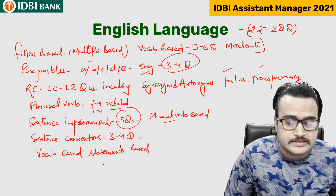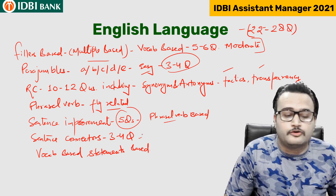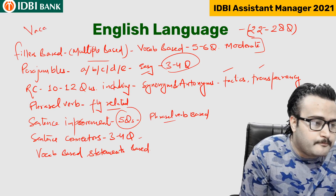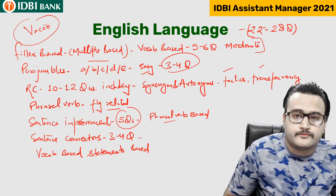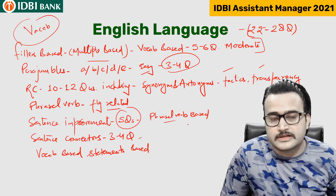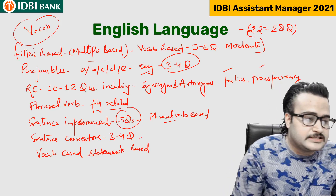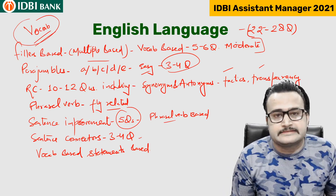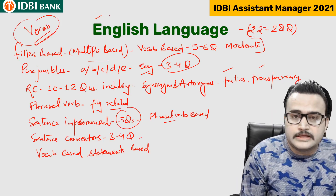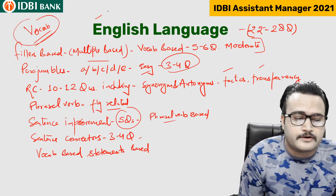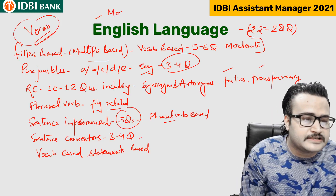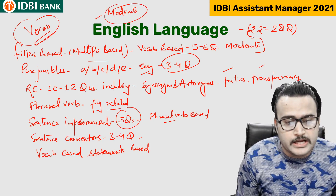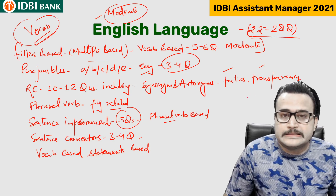Sentence connectors — 3 to 4 questions. Vocab-based statements were also there. In the English Language section, most questions were vocab-based, and just because of this vocab difficulty, students are saying the overall difficulty level of the English section was moderate to difficult.